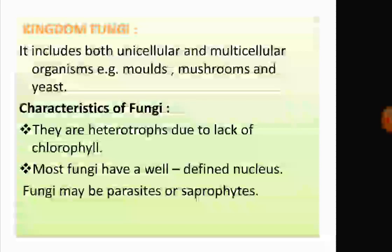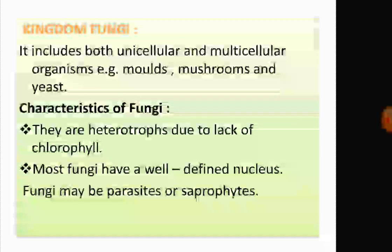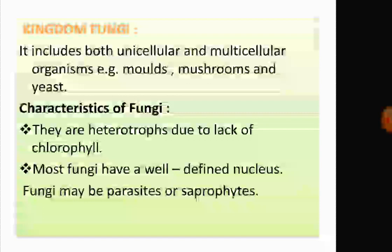Kingdom Fungi includes both unicellular and multicellular organisms. Examples are molds, mushrooms, and yeast. Most fungi have a well-defined nucleus. They are heterotrophs because they lack chlorophyll, meaning they cannot prepare their own food.